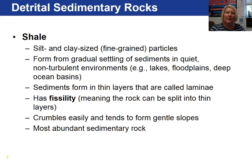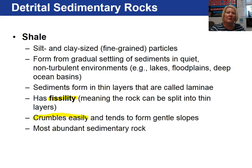Shale is usually dominated by clay-sized material but often contains silt as well. Shale forms in a quiet, non-turbulent environment such as lakes, floodplains, and the deep ocean basins. The clay is deposited in thin layers called laminae. Shale has a special feature called fissility, which means it can be split into thin layers. Shale is very soft, crumbles easily, tends to form gentle slopes, and is the most abundant sedimentary rock.